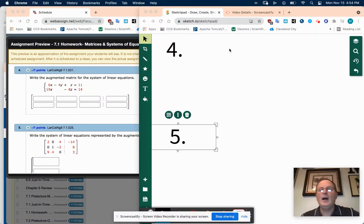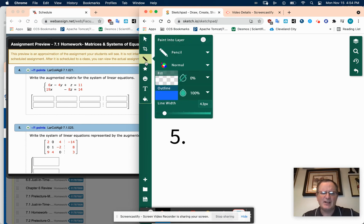Okay, so number four, where it's called the augmented matrix. That is just removing all of the variables and the equal sign and keeping everything in line is really what's happening here.